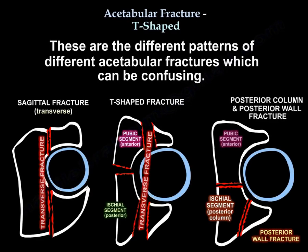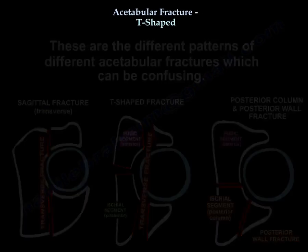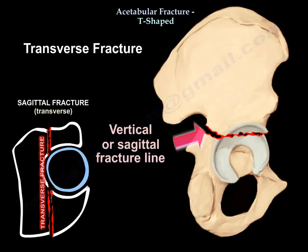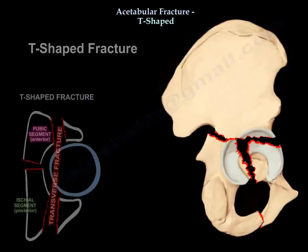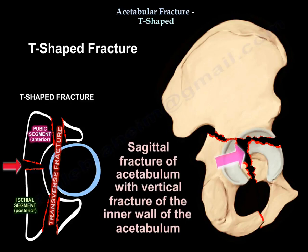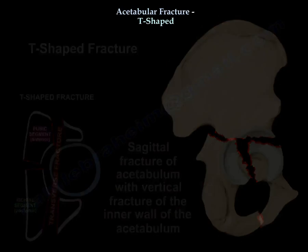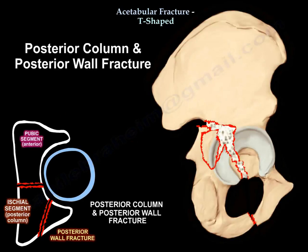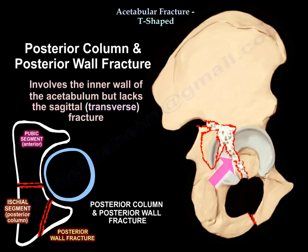These are the different patterns of acetabular fractures that can be confusing. The first is the transverse fracture of the acetabulum, where you can see the vertical or sagittal fracture. The second is the T fracture, which shows the sagittal fracture representing the transverse component plus the vertical fracture involving the inner wall. The third example is the posterior column and posterior wall fracture, which involves the inner wall but lacks the sagittal component of the transverse acetabular fracture pattern.